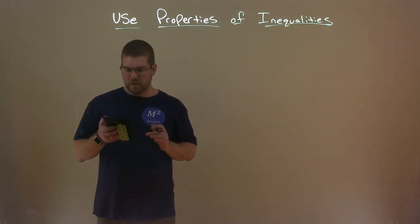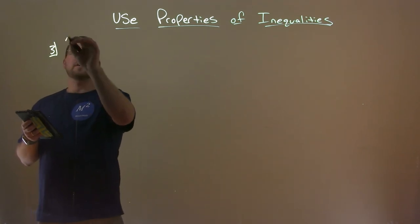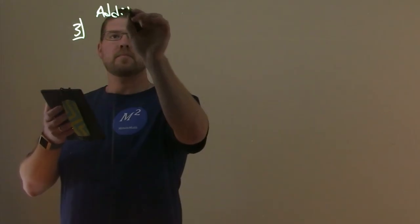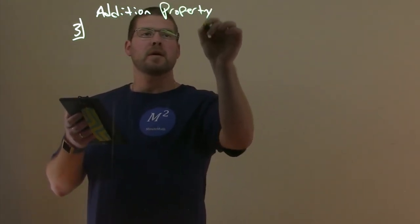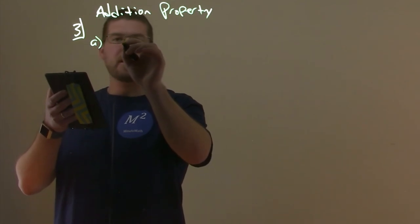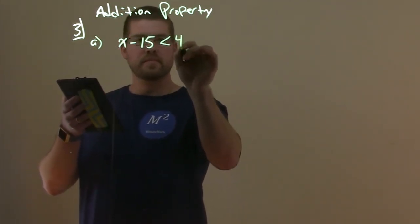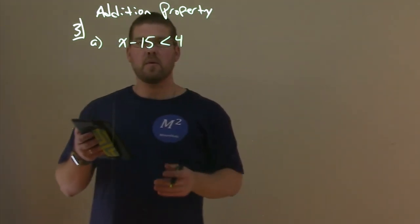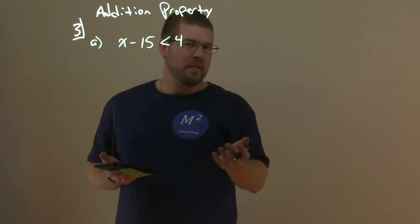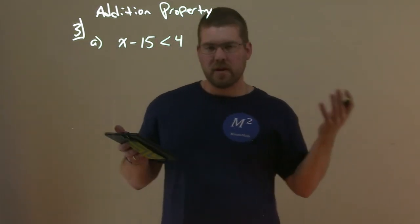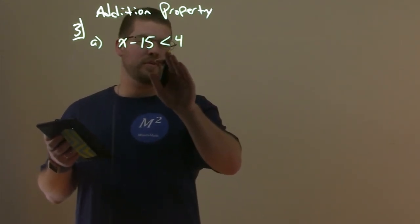So let's demonstrate using the addition property here with example 3. Part A: X minus 15 is less than 4. What they're saying here is that we're allowed to—you've probably done this before, but you don't really know the property allows you to do it. But what it's saying is that we can add 15 to both sides and almost treat this like it's an equal sign.